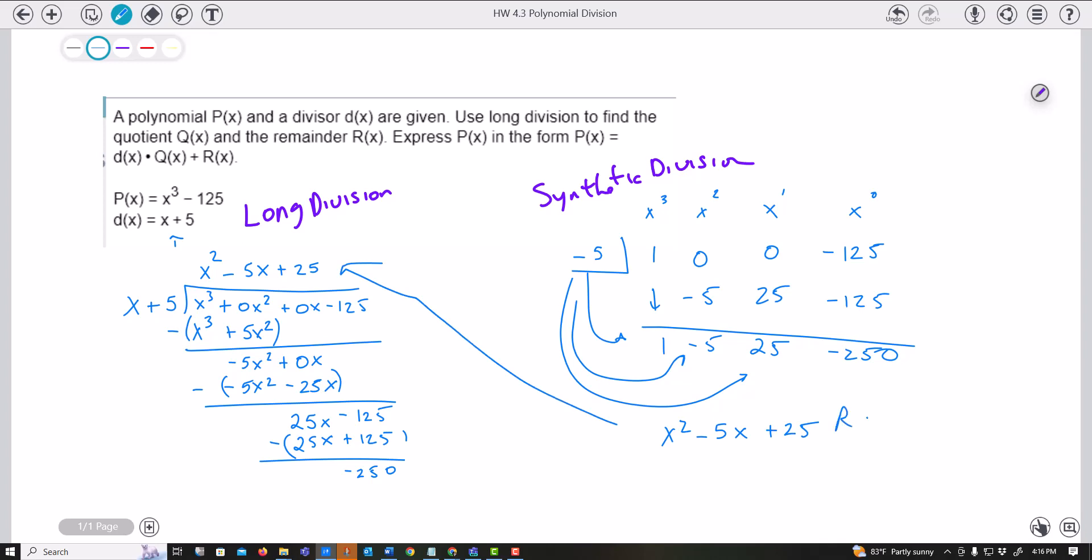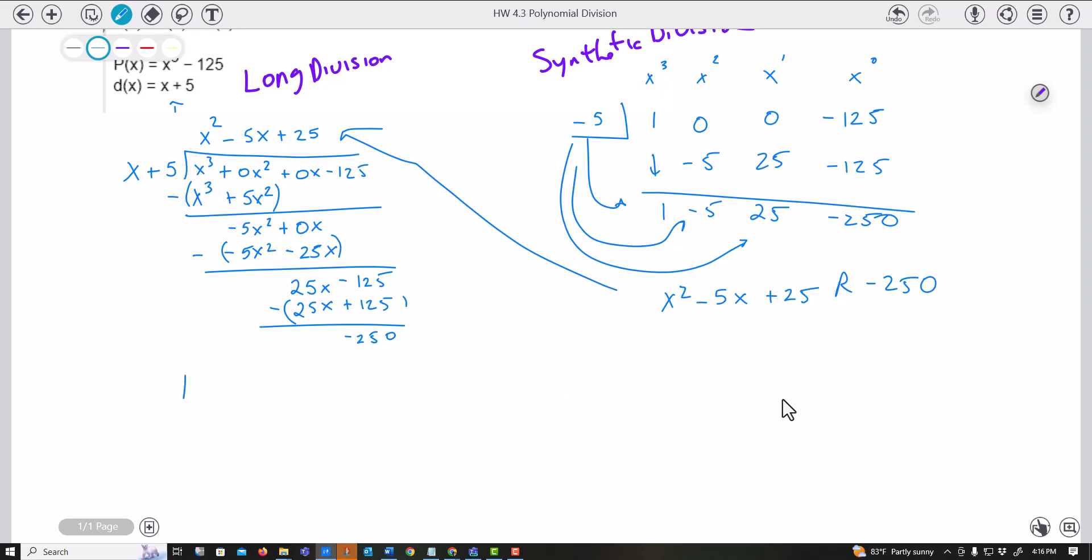And then with my remainder of negative 250. And so what you should do is you should check these based off of my answer. So P of x should be my divisor times my quotient and then plus my remainder. So either one of these, however you want to do it. I got x squared minus 5x plus 25 times my x plus 5 and then plus my remainder, which is negative 250. So if I actually multiply these out,